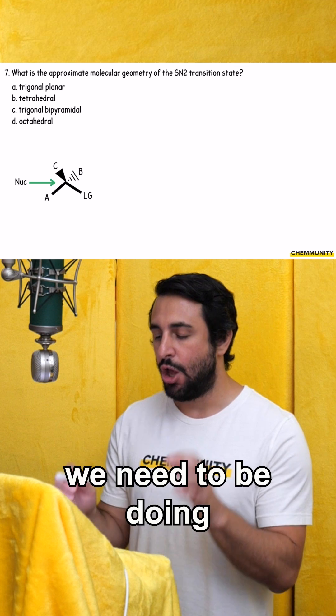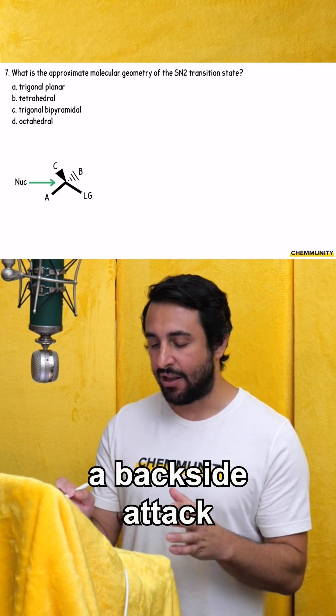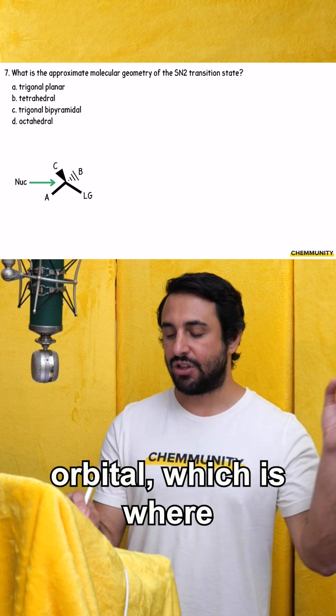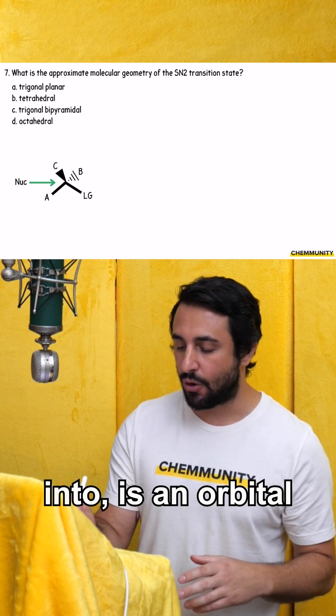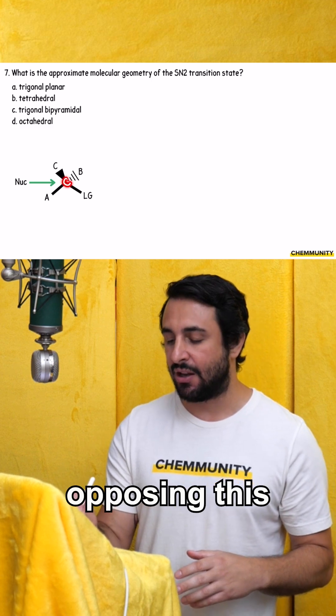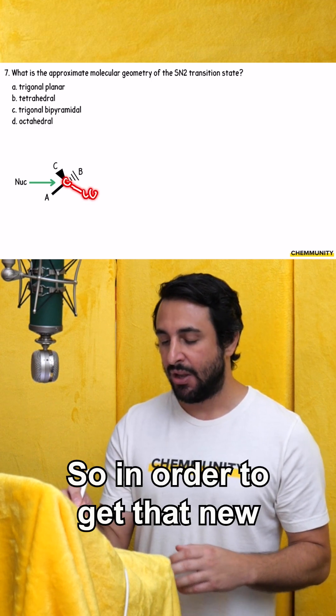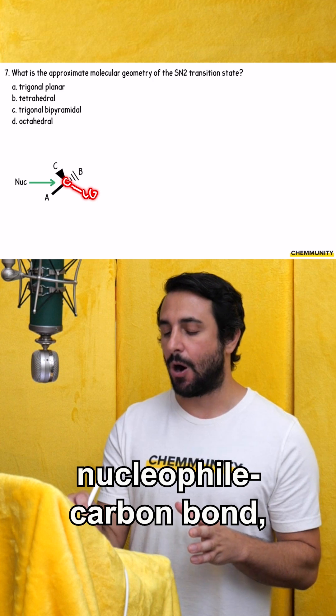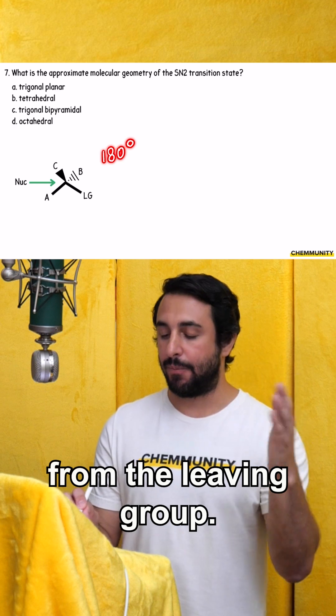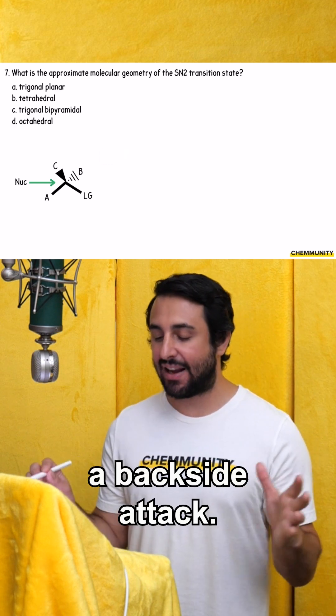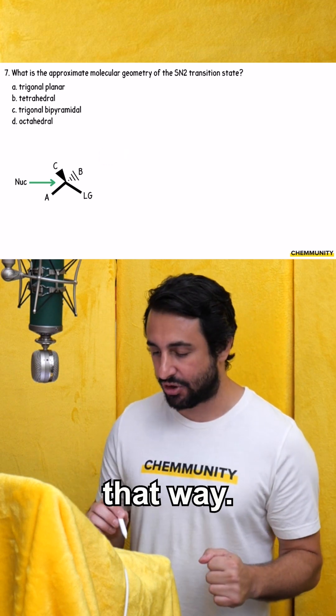But for SN2, we need to be doing a backside attack because the lowest unoccupied molecular orbital, which is where the nucleophile needs to dump electron density into, is an orbital that is directly opposing this carbon leaving group bond. So in order to get that new nucleophile carbon bond, we have to approach in a direction that is 180 degrees from the leaving group. So it's called a backside attack.